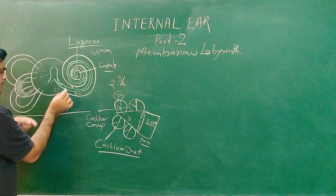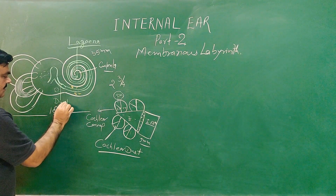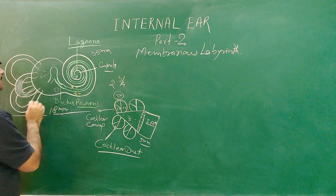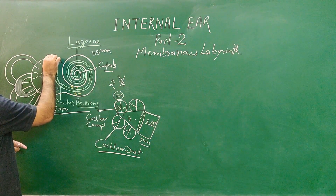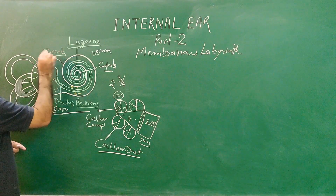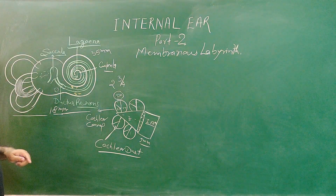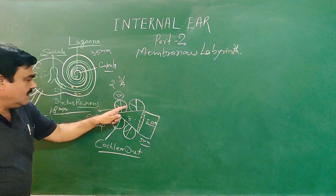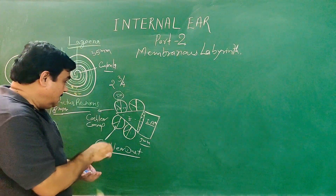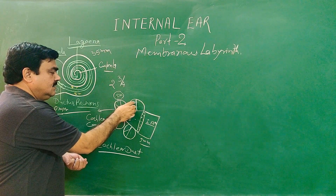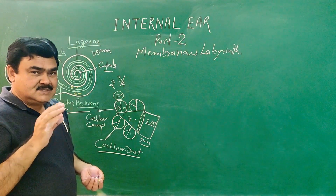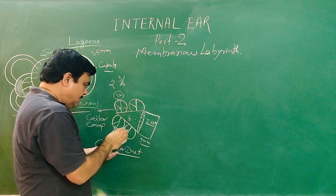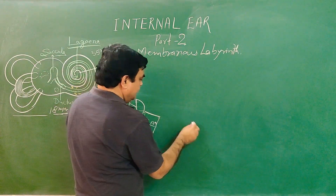This is the membranous labyrinth. It communicates with the side here. In this membranous labyrinth, in this part, the organ of Corti is present — that is the organ of hearing. Here the organ of Corti is present.